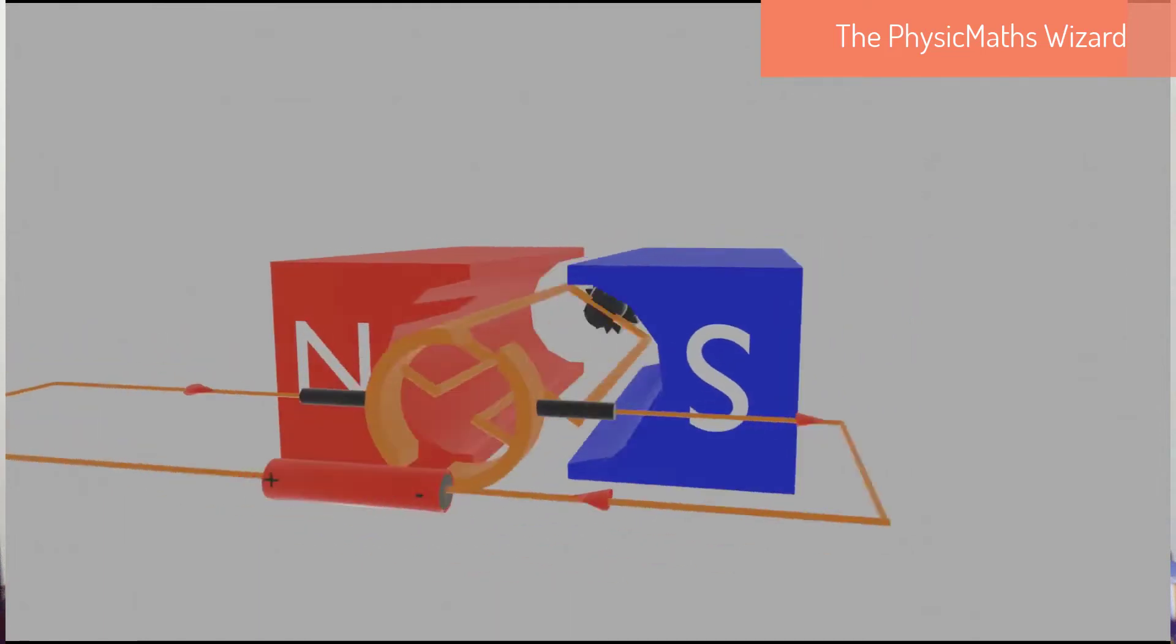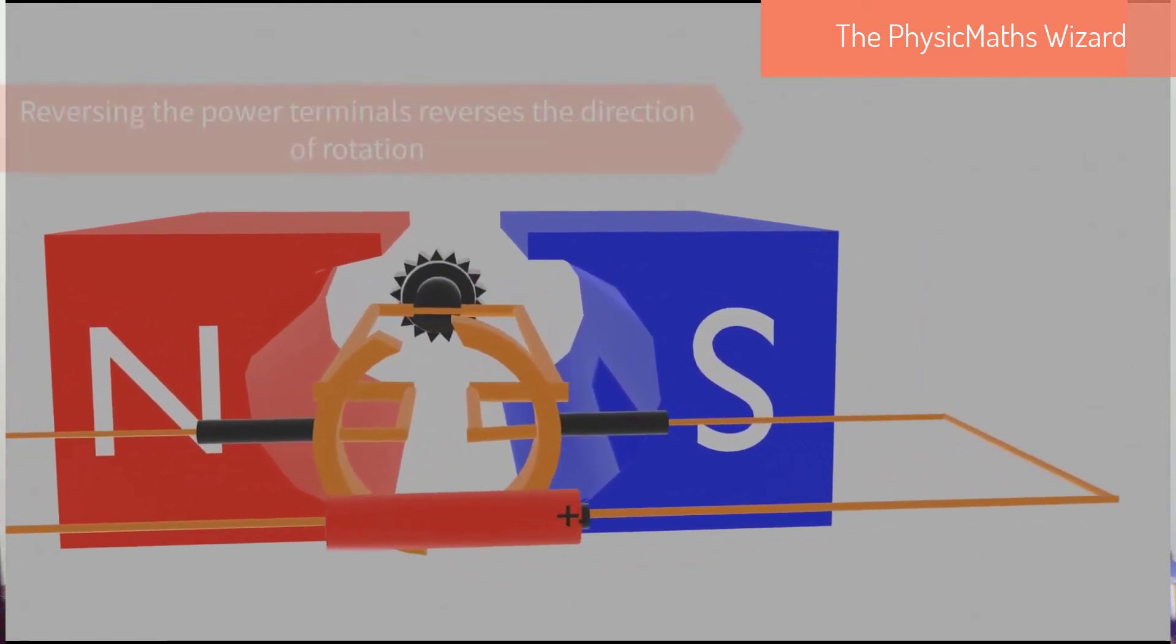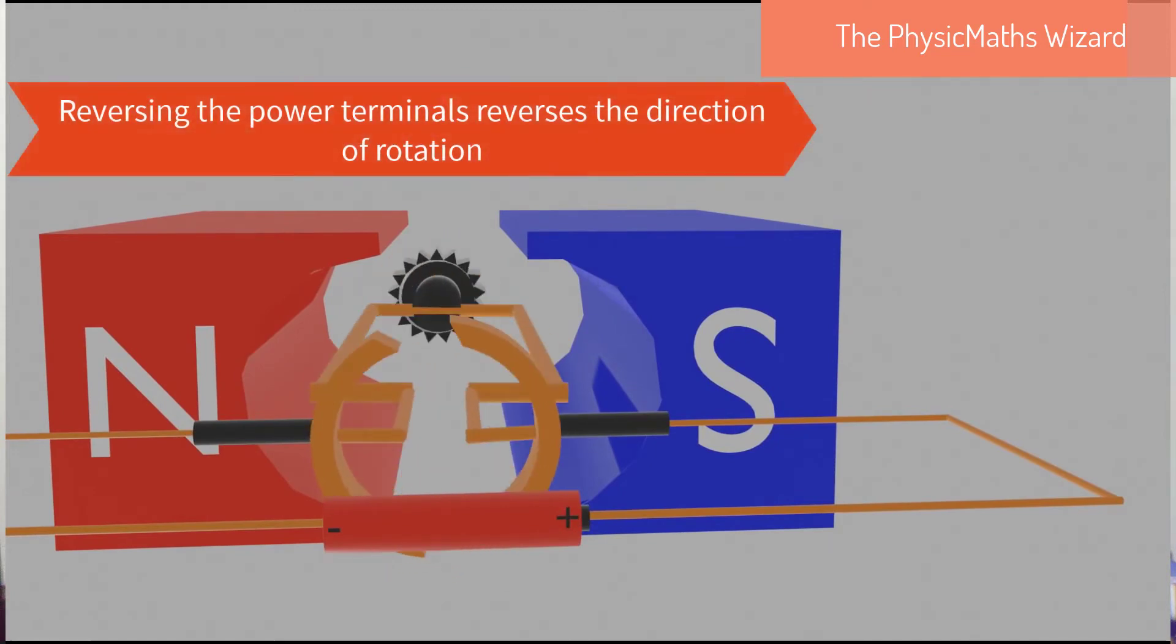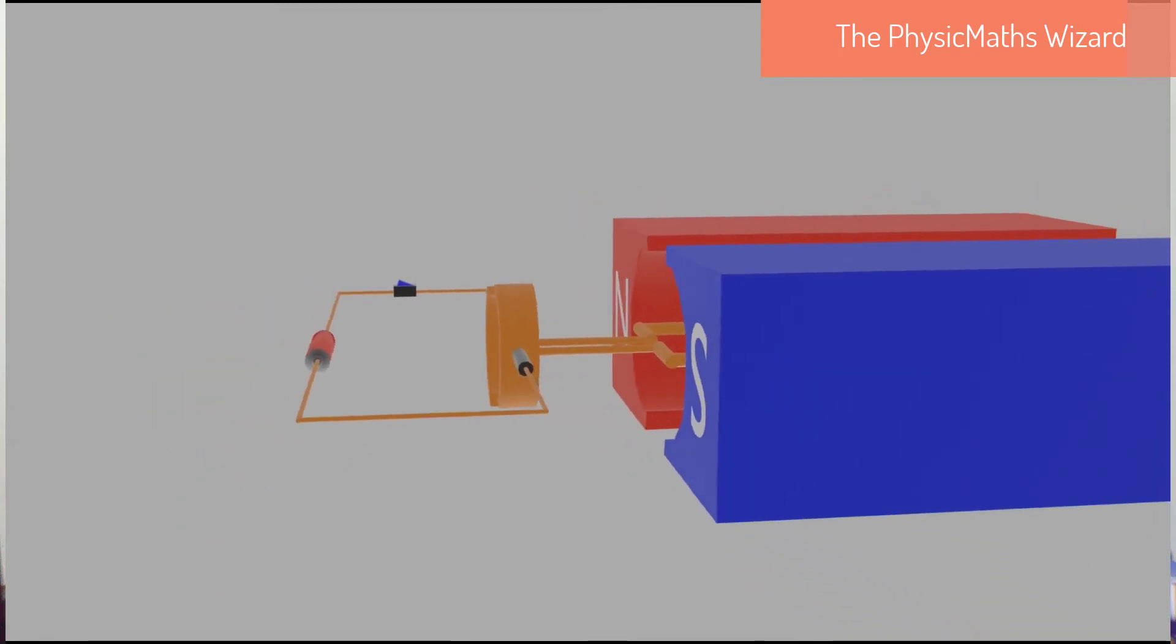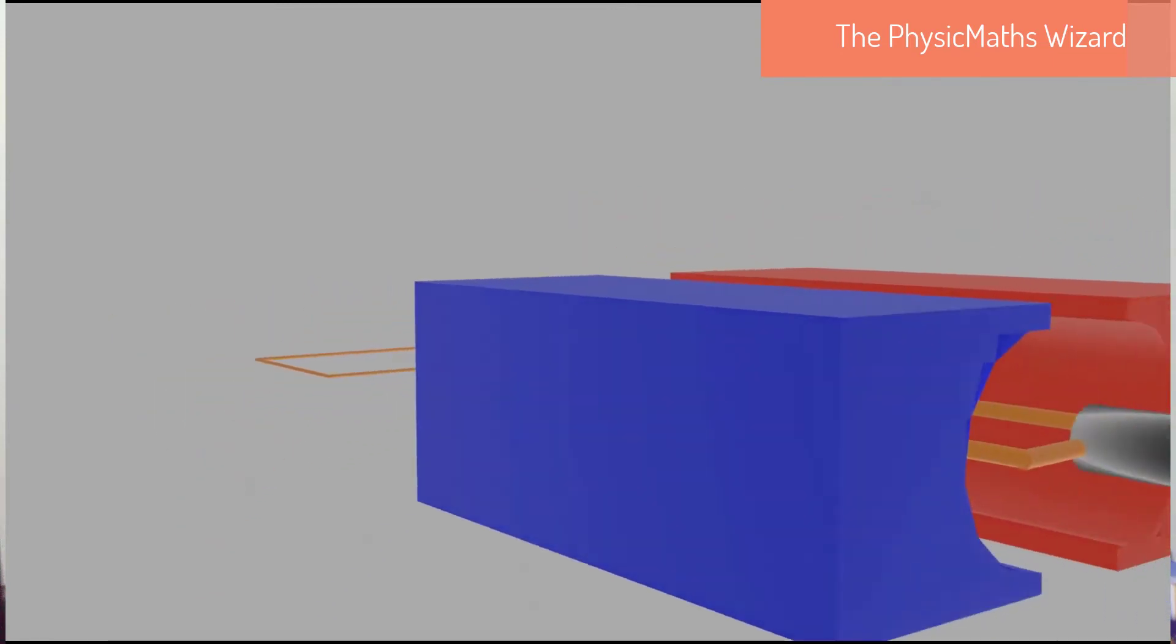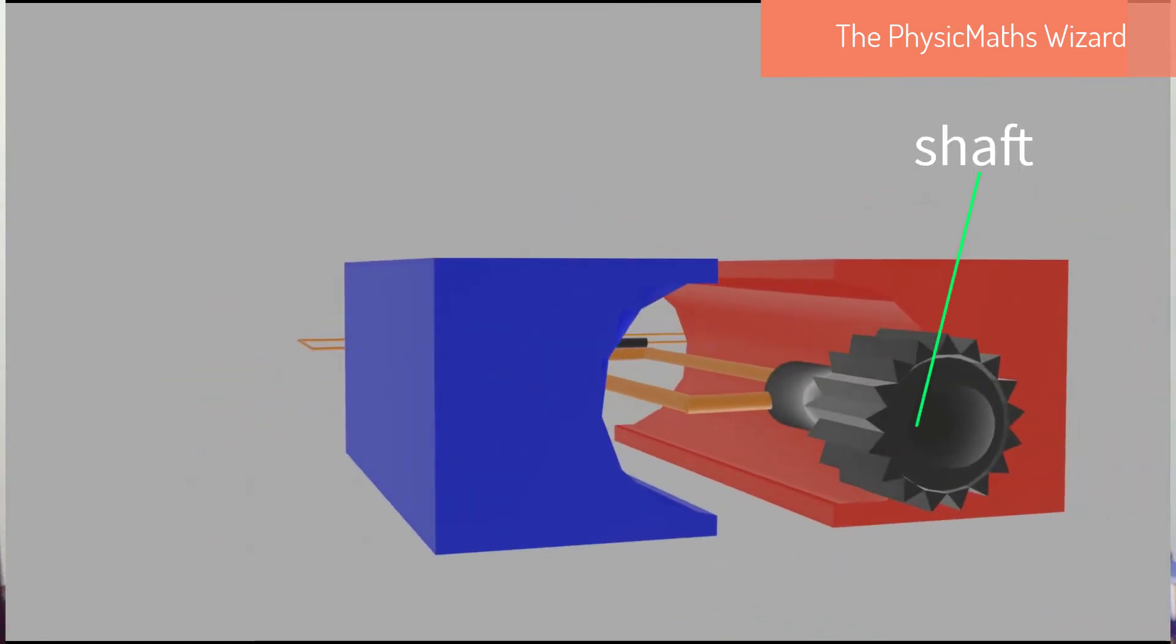When the terminals of the battery are reversed, the direction of rotation of the motor also reverses. A shaft is usually attached to the armature and it rotates with it. This is the part that we see when we are using the motor.